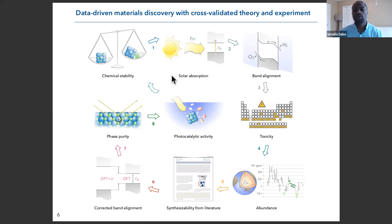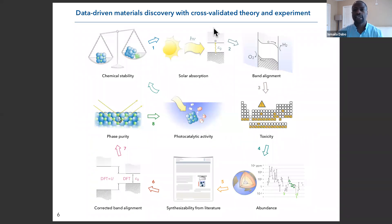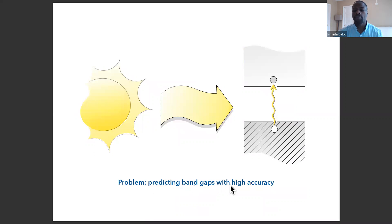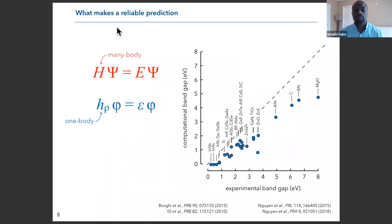I'm now going to focus on two main problems. The first is how to calculate accurate band gaps, describing the techniques we used — a specificity of our work. Then I'll discuss how we make materials and check their phase purity before presenting the final results of this co-validated theoretical and experimental study. The technique we use to predict the band gap is density functional theory (DFT), a method that enables you to simplify the many-body Schrödinger equation into a tractable one-body problem.